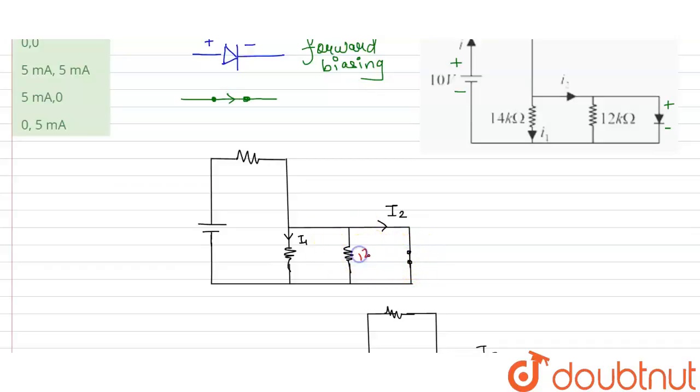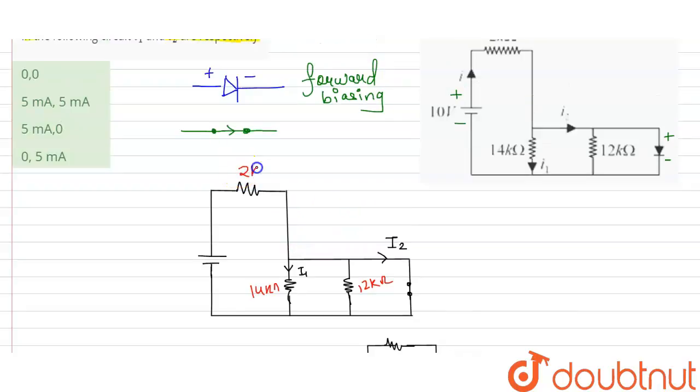So this is our resistance 12 kilo ohm. This is our resistance 14 kilo ohm. This is i1. This is i2. And this is 2 kilo ohm. And this is 10 volt.